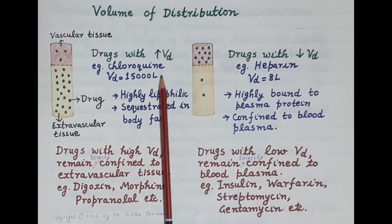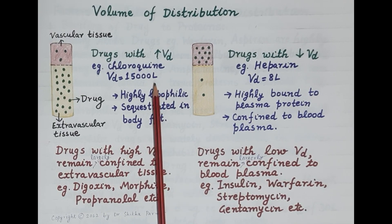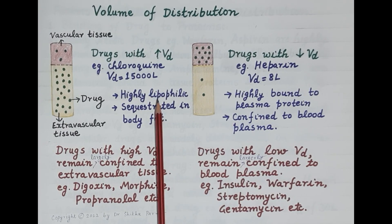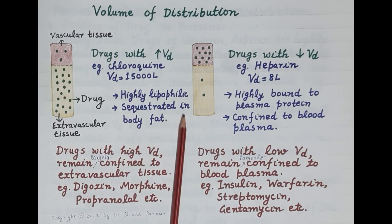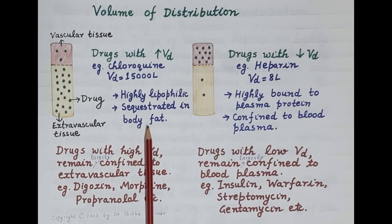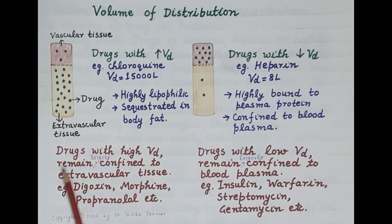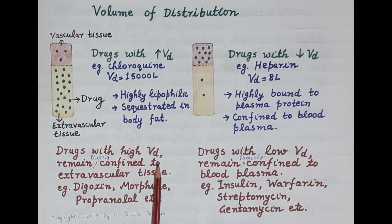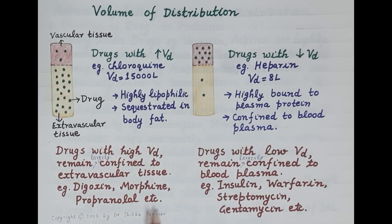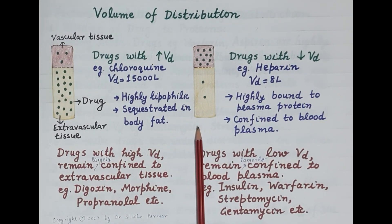An example of a drug with high volume of distribution is chloroquine, which has a volume of distribution of 15,000 liters. Chloroquine is highly lipophilic — a lipid-soluble drug that easily passes through cell membranes and is sequestered in body fat. Once it reaches the adipose tissue, it hides there. Drugs with high volume of distribution remain largely confined to the extravascular tissues — for example, digoxin, morphine, and propranolol.